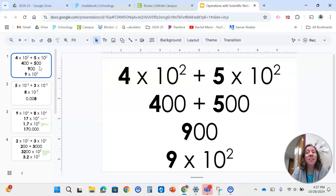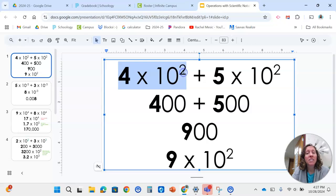Today you are going to work on adding and subtracting numbers in scientific notation. Let's start with an easy one. This represents 400 and this represents 500. If we add those together, it is 900. So we can get that by doing 4 plus 5 and keeping the same exponent.